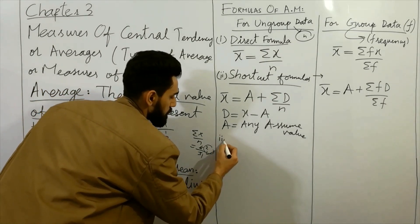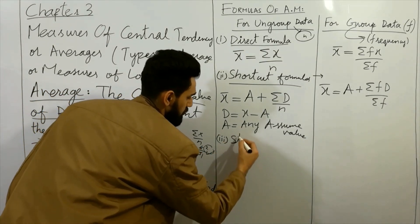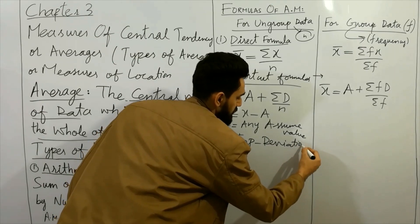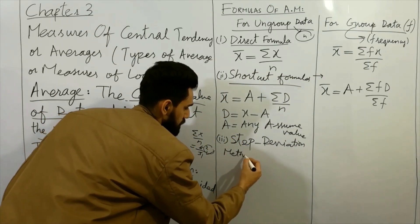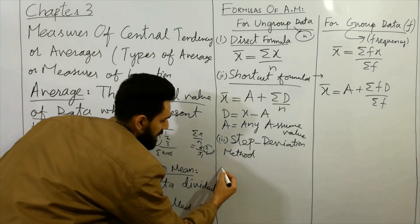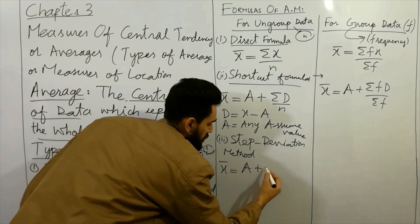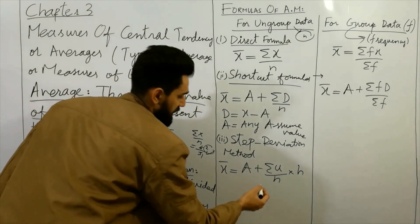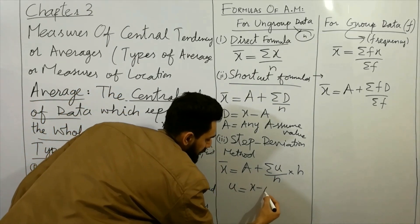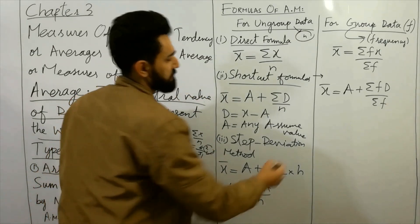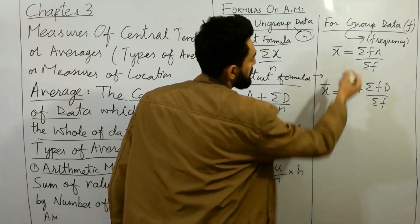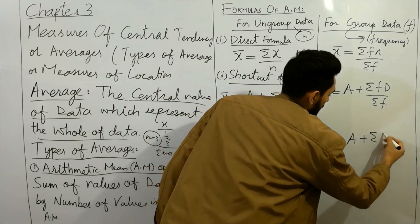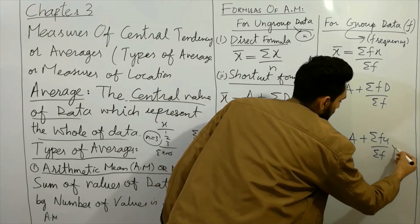The third formula is the step deviation method. For ungrouped data, the formula is: x̄ = A plus ΣU over N multiplied by H, where U = (x minus A) divided by H. For grouped data using the step deviation method, the formula is: x̄ = A plus ΣfU divided by Σf, multiplied by H.